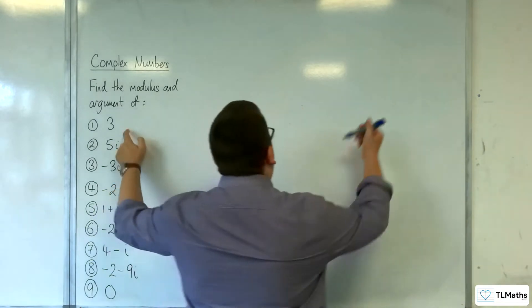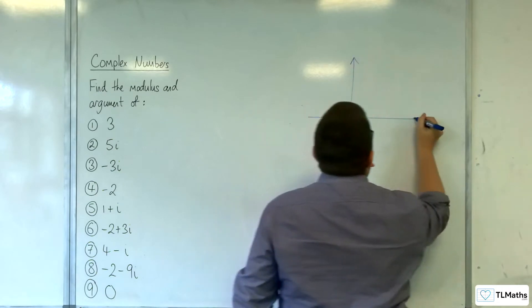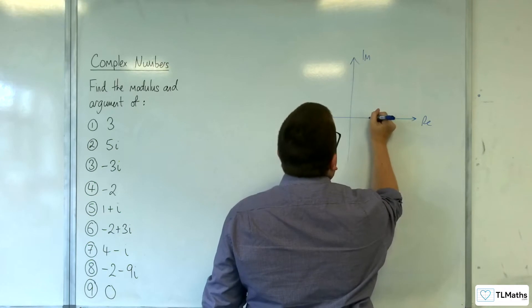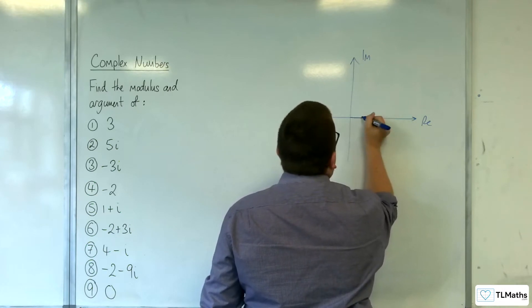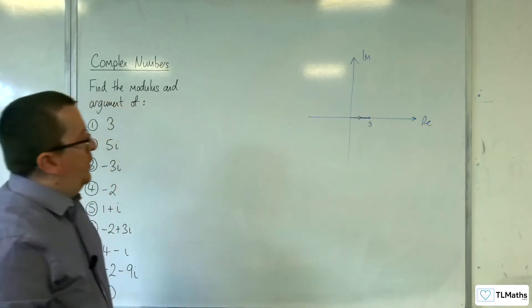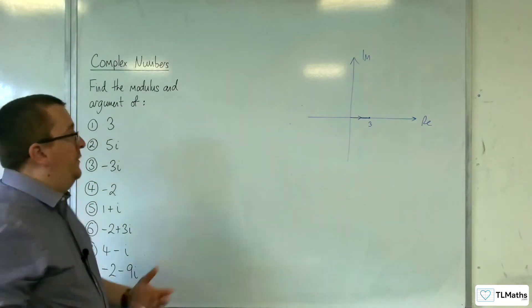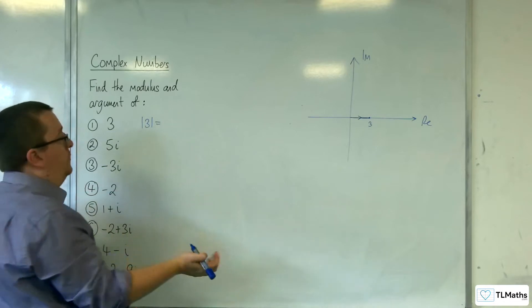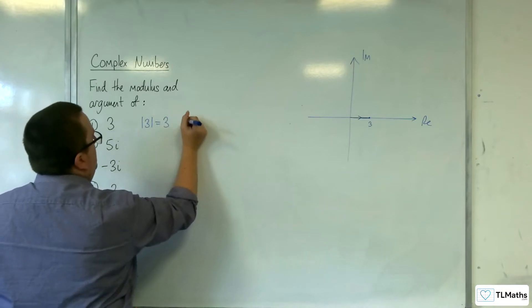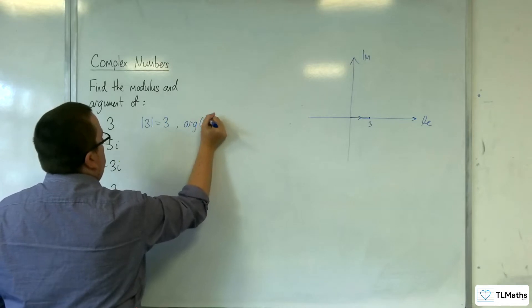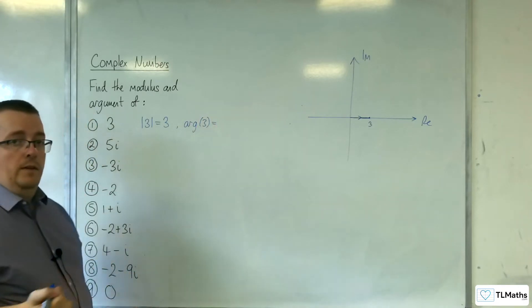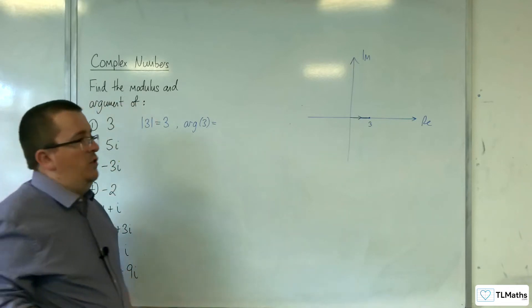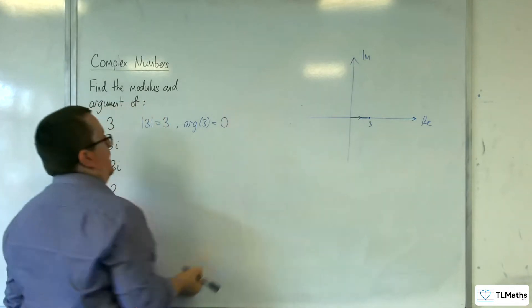Let's have a look at this first one, nice and simple to start off with. Here's our Argand diagram. Here's 3 on the real axis. First of all, what is its length? The modulus of 3, well, the length from the origin to 3 is just 3. The argument of 3, what is the angle that this number is making with the real axis? Zero. So the argument is zero.